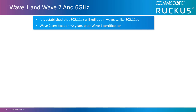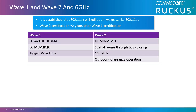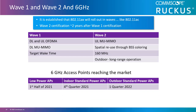802.11ax will roll out in waves similar to 802.11ac, with Wave 2 certification occurring one to two years after Wave 1. Wave 1 will include download and upload OFDMA, download multi-user MIMO, and target wake times. Wave 2 will include upload multi-user MIMO, spatial reuse through BSS coloring, 160 MHz channels, and 6 GHz long-range operation with AFC support.